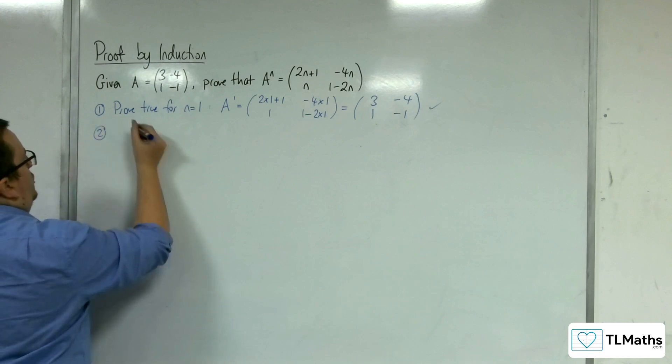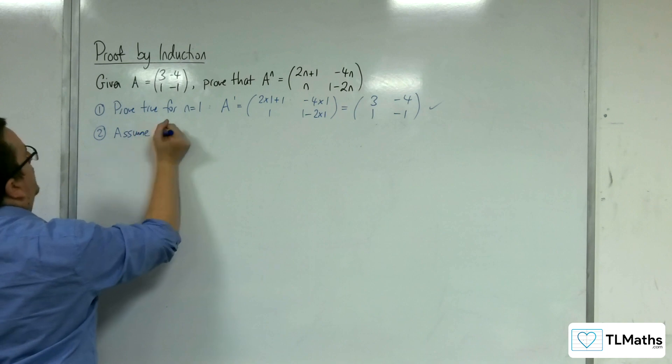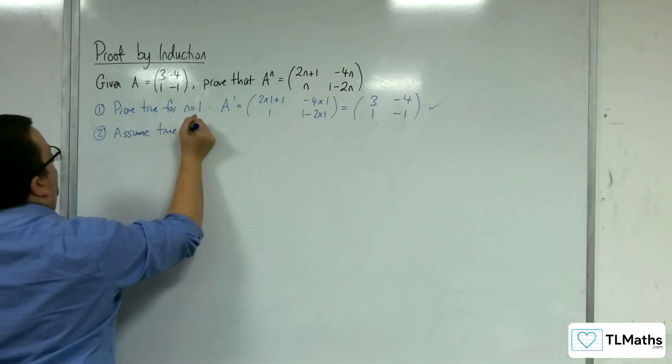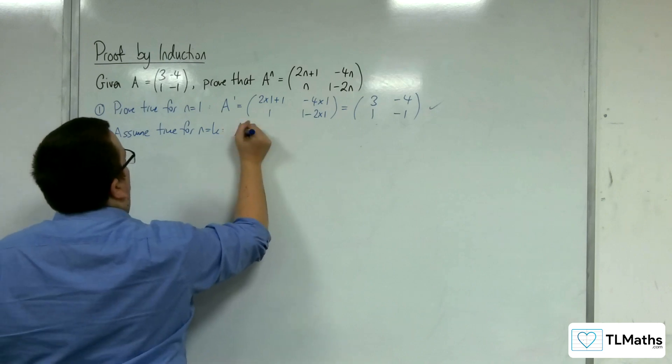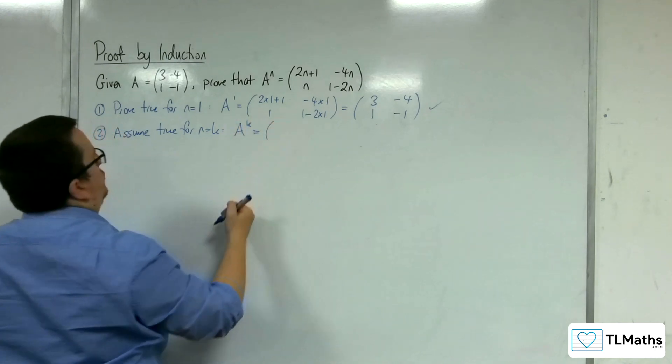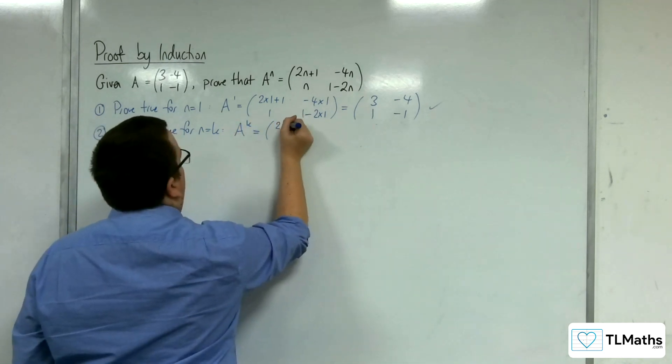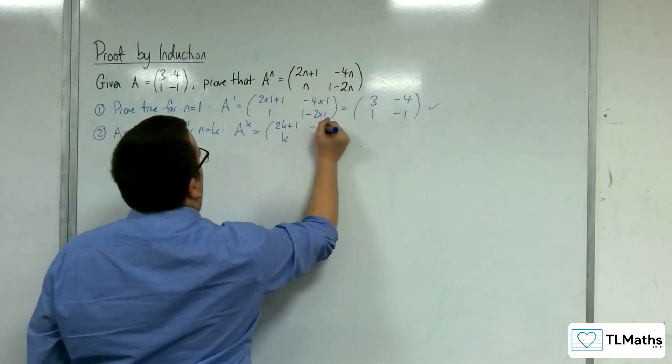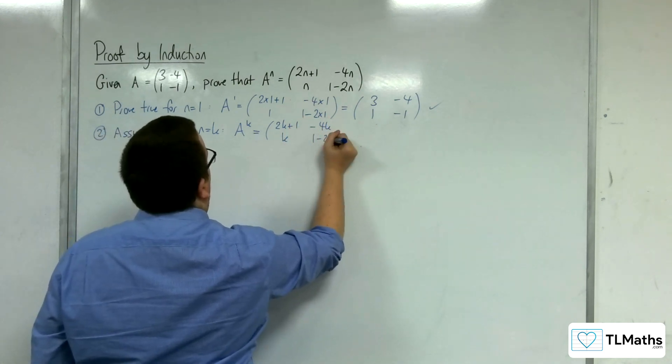Part 2, stage 2, assume true for n equals k. So A to the k, we're just going to replace each of the n's with k: 2k plus 1, k, minus 4k, 1 minus 2k.